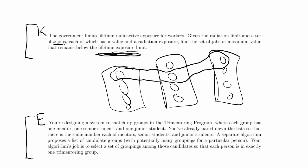And what's n, the number of elements in each set? Well, that's the number of mentors, senior students, and junior students. We do know that there's exactly the same number of each of those.